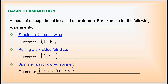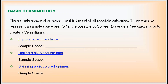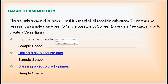Let's cover one more basic term: sample space. The sample space of an experiment is the set of all possible outcomes — what we might get by performing the experiment. There are three ways to represent the sample space: listing the possible outcomes, creating a tree diagram, or creating a Venn diagram.